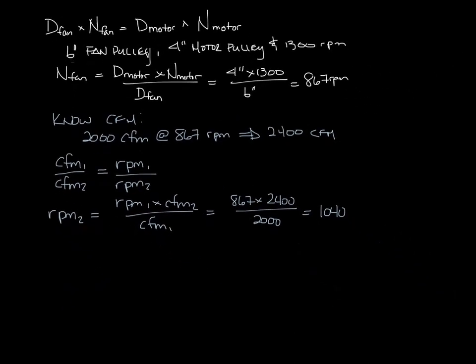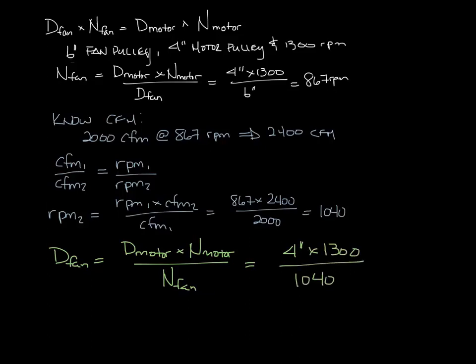So now we can go back to our equation for the pulleys, and the diameter of the fan is equal to the diameter of the motor times the RPM of the motor divided by the RPM of the fan. So that is 4 times 1300 divided by 1040, and that equals 5 inches. So a 5 inch diameter pulley on our fan system here would give us the 2400 CFM we're looking for.